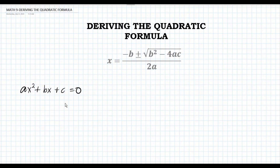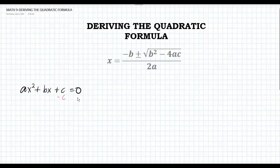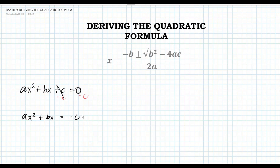To start with, we will transpose this positive c to the right side of the equation. To do that, let us subtract c from both sides of the equation. Then the equation will become ax squared plus bx equals negative c.